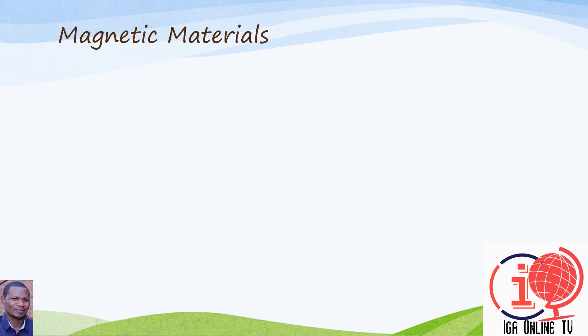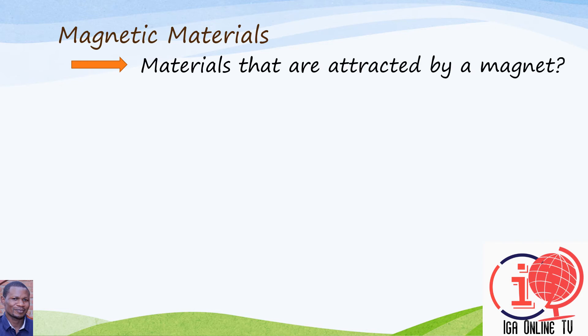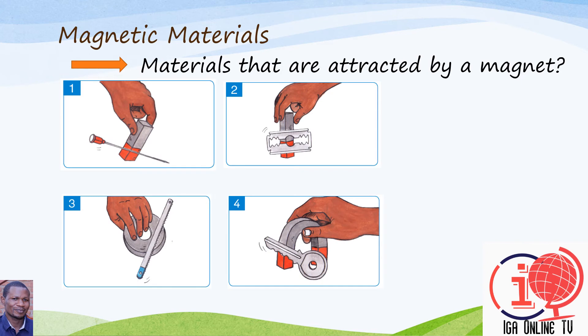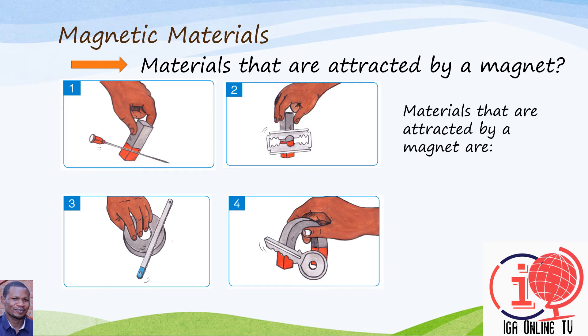Let's look at materials that are attracted by a magnet. Look at the following pictures. Materials that are attracted by a magnet are needles, razor blades, keys, and nails. There are many other materials which are attracted by magnets — you can list some of them.